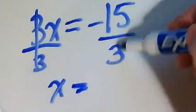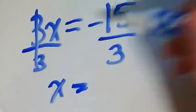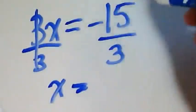And then we divide this side by 3 as well because we're dividing equally. That's what the property means. If I do it to one side, I do it to the other.